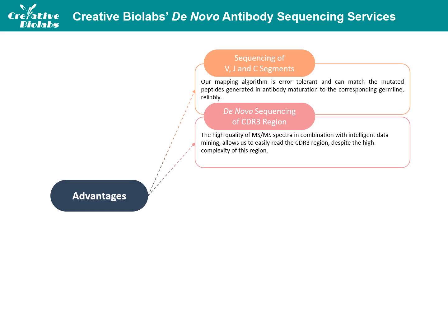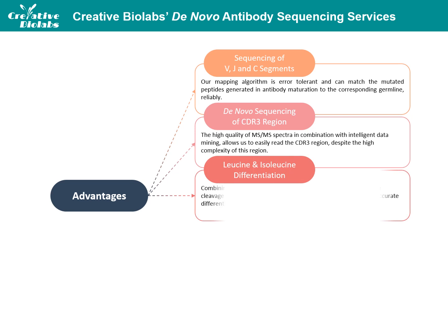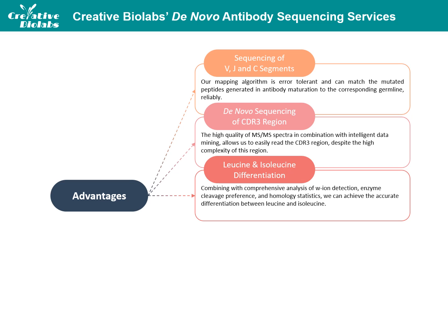For the de novo sequencing of the CDR3 region, our method generates many overlapping peptides during the fragmentation process, enabling us to sequence very long stretches of unknown amino acids. The high quality of mass spectrometry spectra in combination with intelligent data mining allows us to read the CDR3 like a book. The technique is so powerful that we were able to sequence a 20 kilodalton protein which had no homologue in the database. For the differentiation between leucine and isoleucine, we combine comprehensive analysis of ion detection, enzyme cleavage preference, and homology statistics to achieve accurate differentiation between leucine and isoleucine, even though these two residues are considered difficult to distinguish by mass spectrometry.